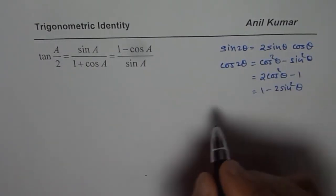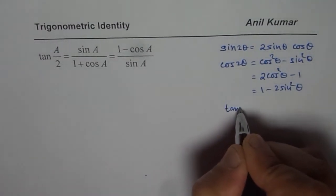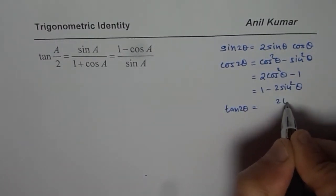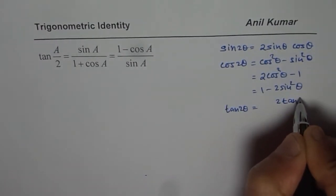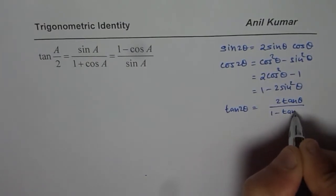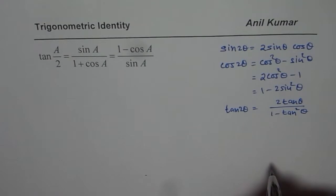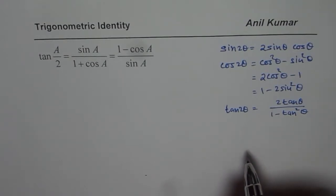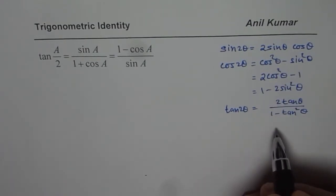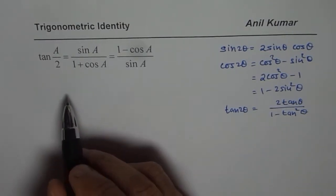We also know tan 2 theta, which is 2 tan theta divided by 1 minus tan squared theta. Whenever you are proving an identity, it is important to have this list with you as a reference. Now let us look into the question.